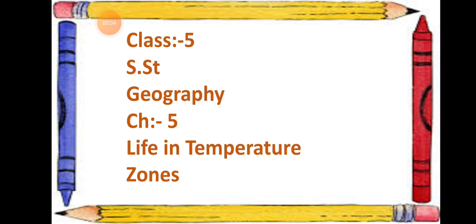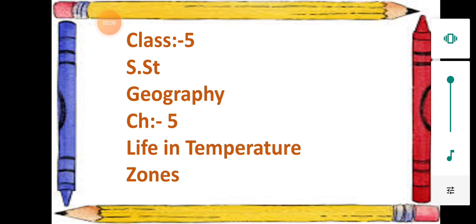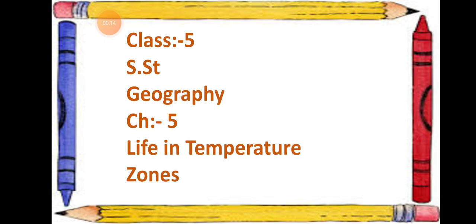Good morning dear students. Today we will start Chapter 5, Life in Temperature Zones. We have already studied about the three temperature zones in which the earth is divided on the basis of climatic conditions of different areas. Today we are going to study about the kind of vegetation and wildlife found in those different zones.